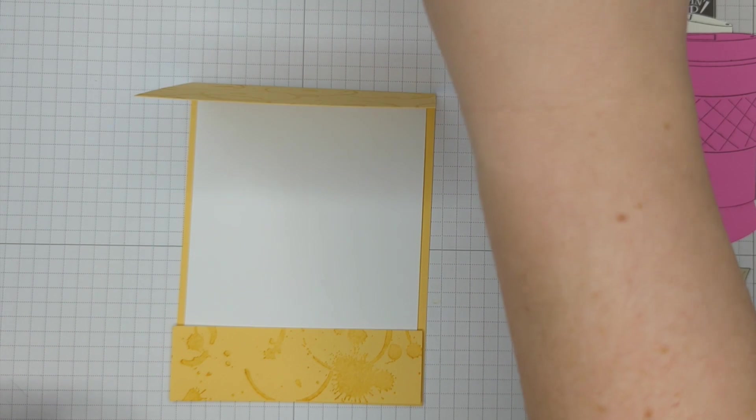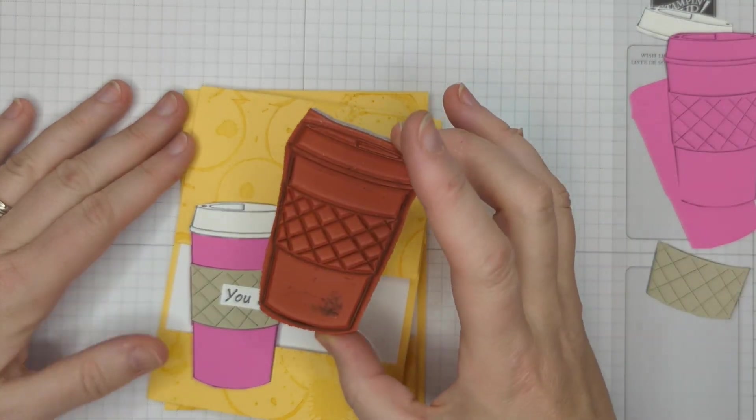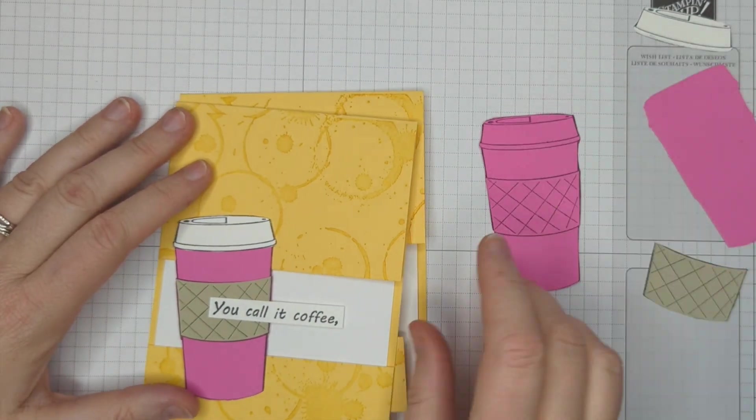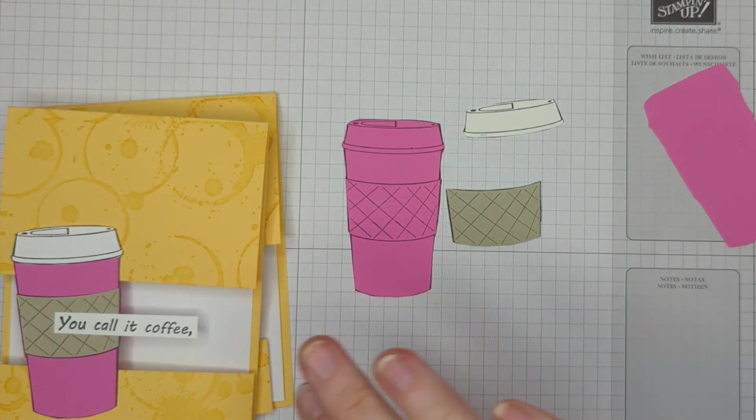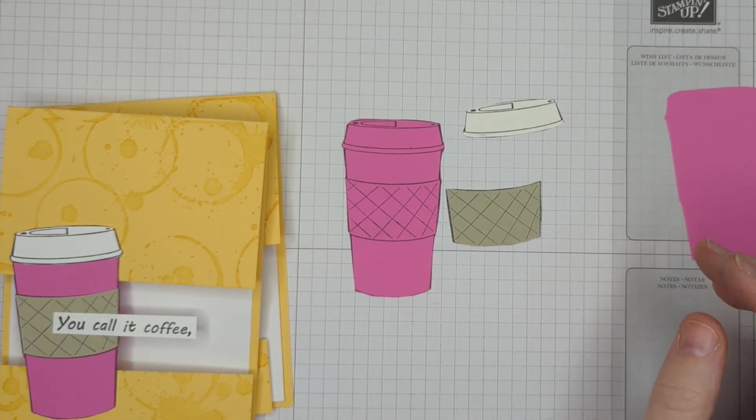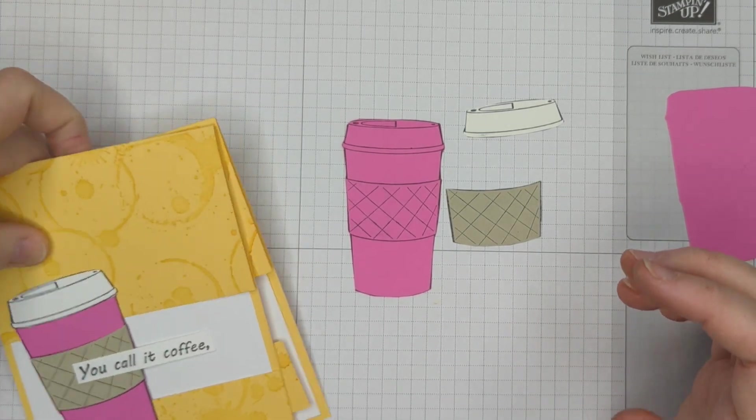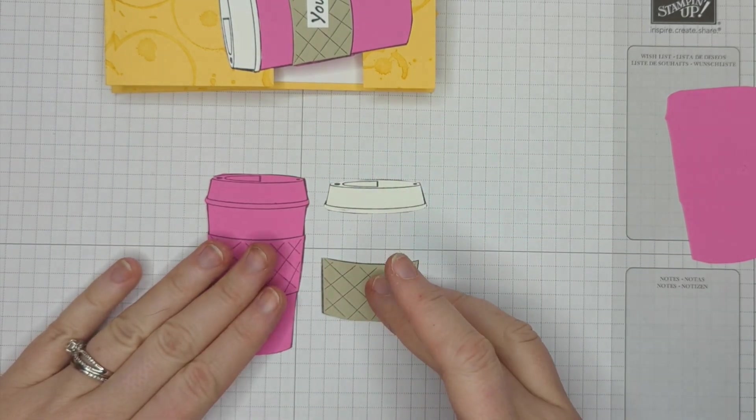Now, to create the coffee cup, I used a new stamp of mine. It is this giant coffee cup. I stamped this on a real bright piece of paper, pink, on brown, and on white, and I cut all the pieces out, and I did that off camera because I don't want to bore you guys to death. And we can put them together to create more of a 3D coffee cup.